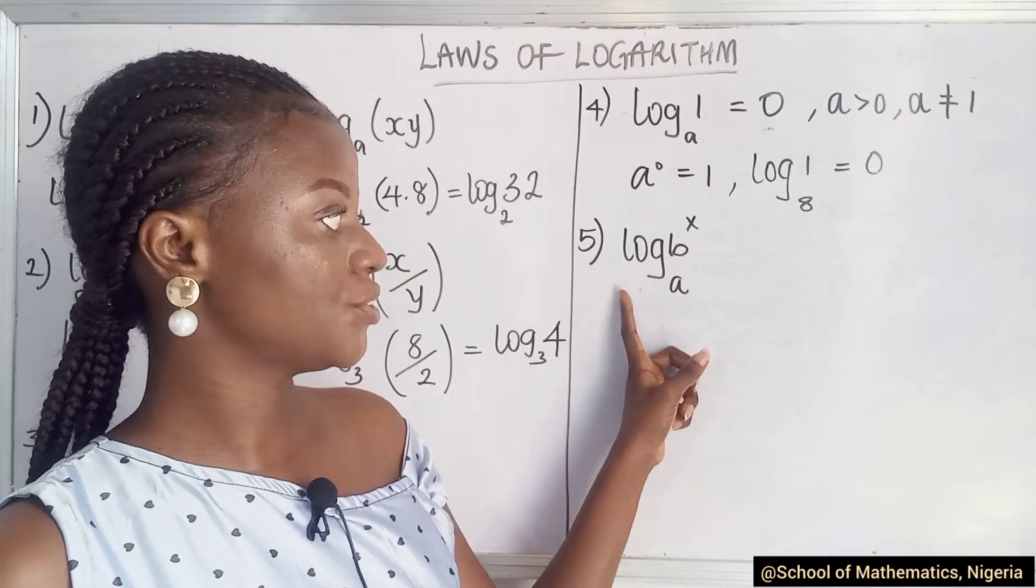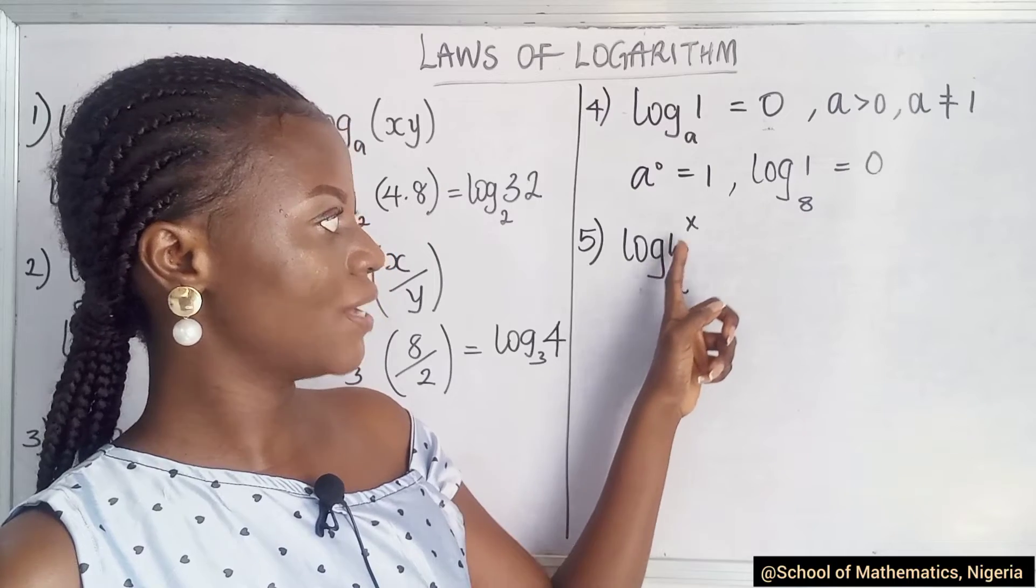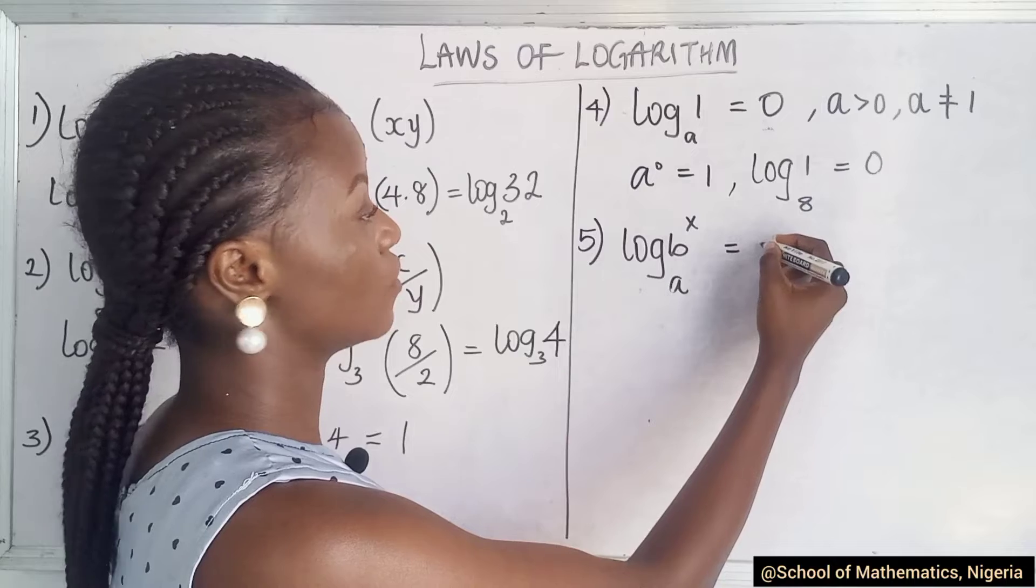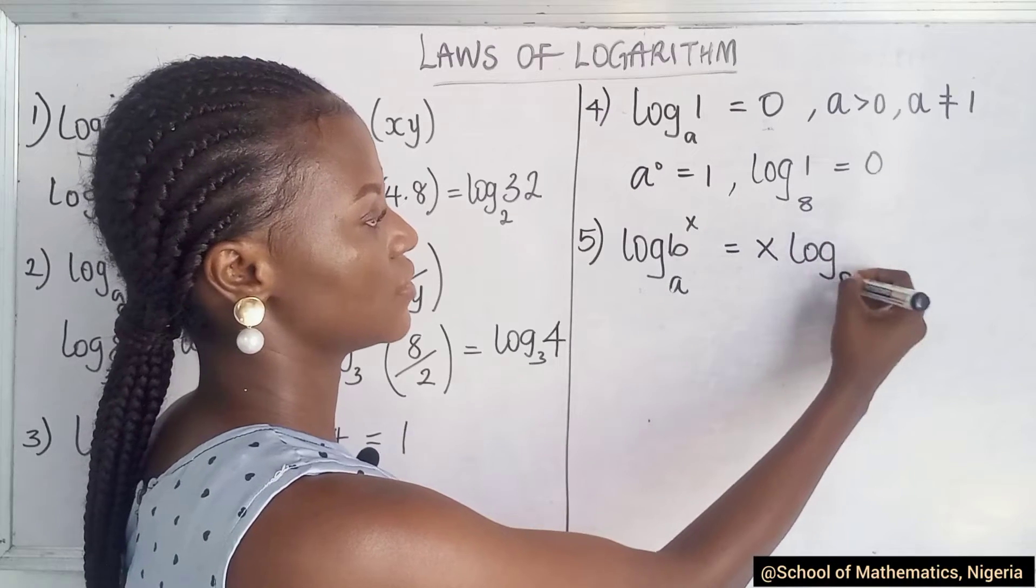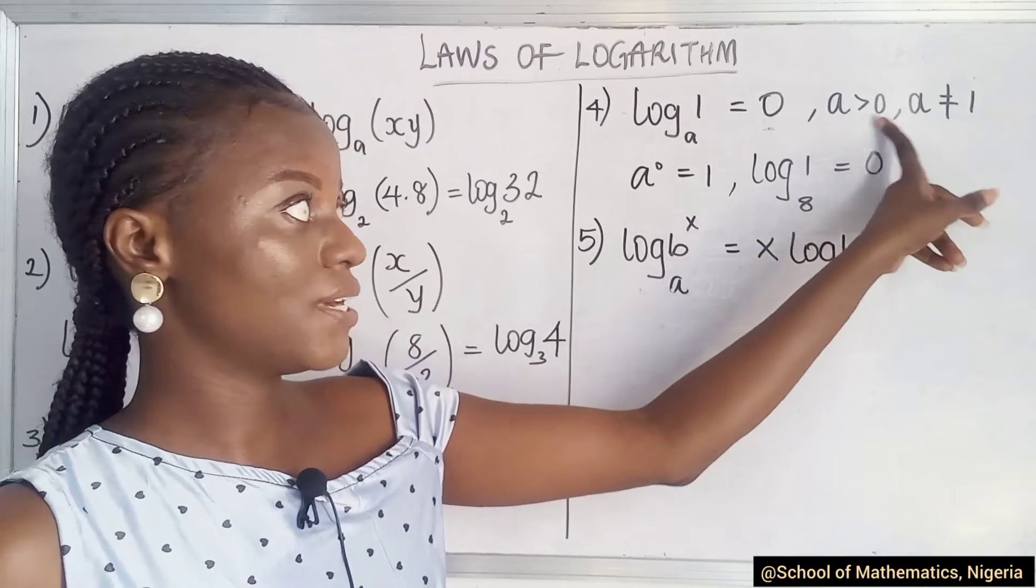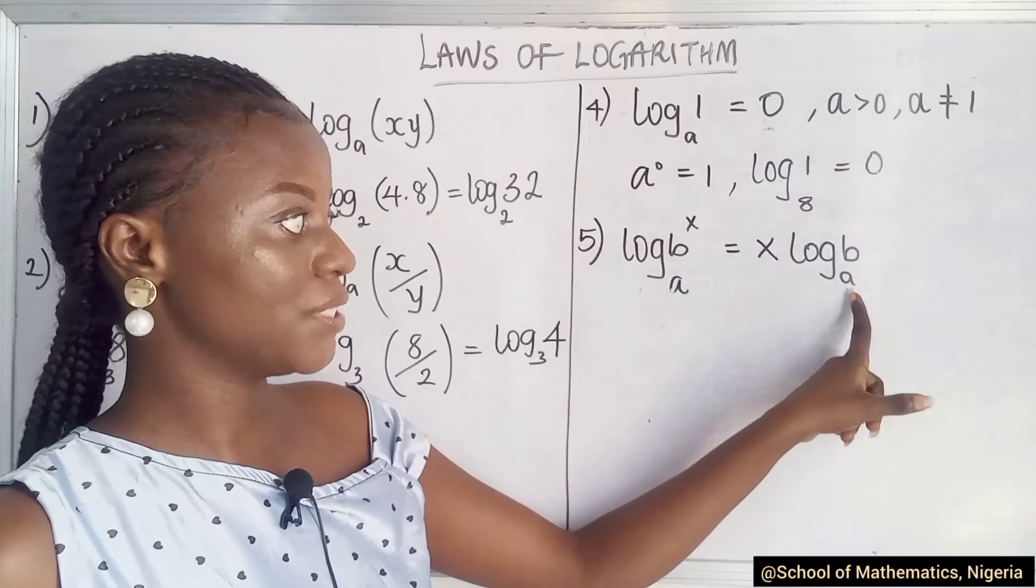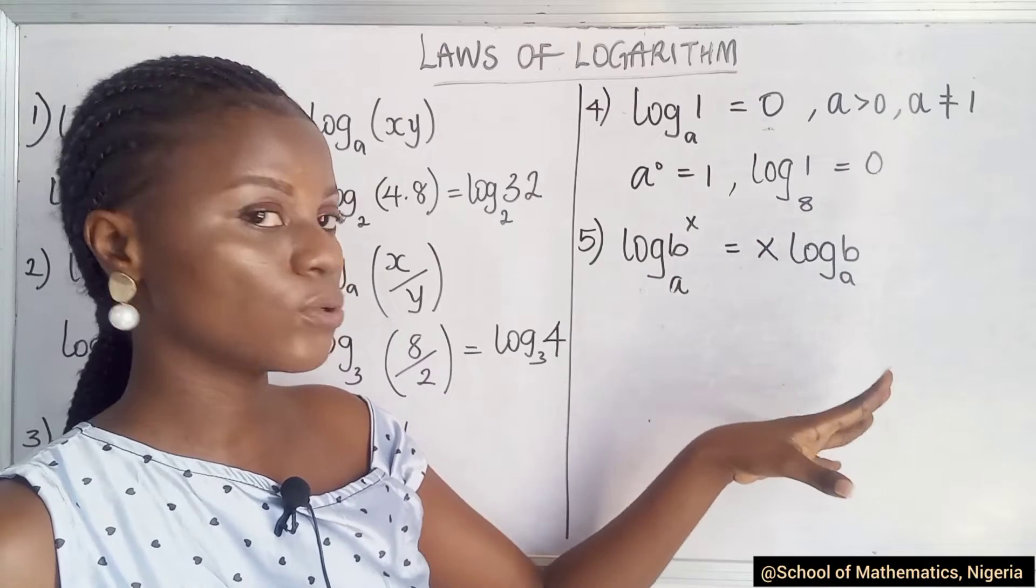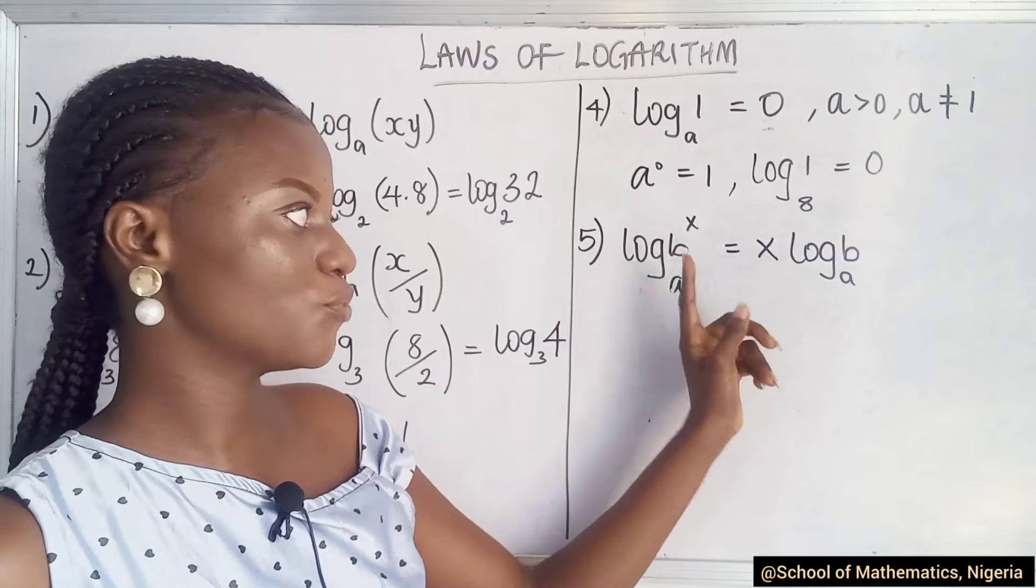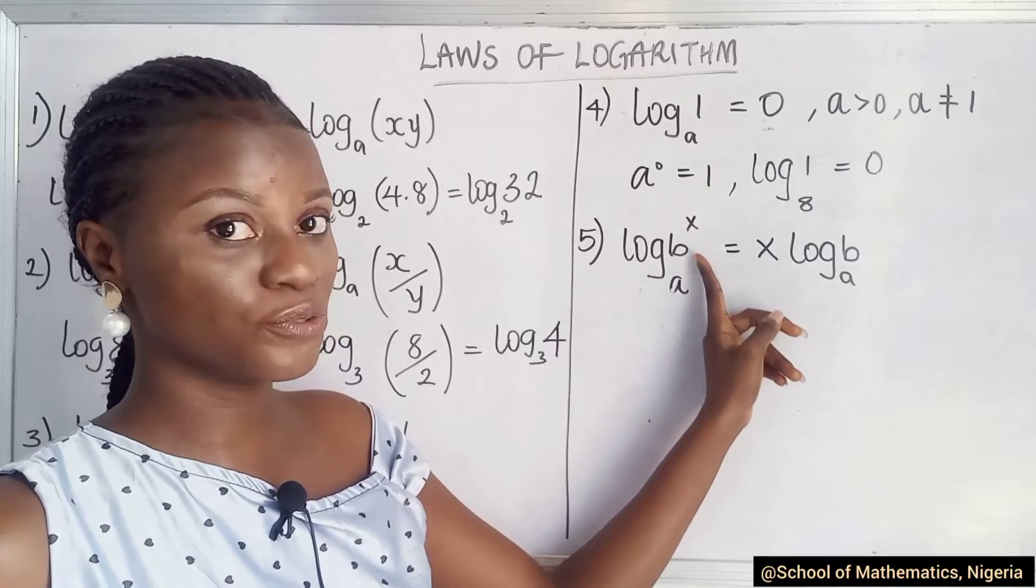So we have the next rule, which is this one. It says whenever you have the base to a value and a power, what happens? The power comes forward, or will I say backwards? And then you have this. But please take note of this condition. It applies everywhere. It applies in almost all the rules. This base has to be greater than 0 and not equal to 1. And this cannot be 0. If it's 0, obviously you know this becomes 1 because anything raised to the power of 0 is 1.